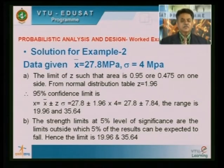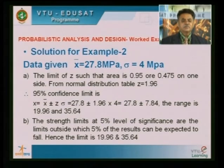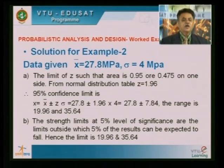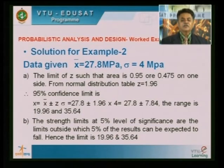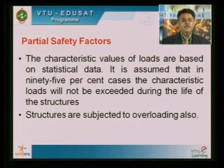The 95 percent confidence limit: x = x-bar ± z × sigma = 27.8 ± 1.96 × 4 = 27.8 ± 7.84. The range is 19.96 to 35.64. Parts B and C are calculated on the same basis — I hope they are self-explanatory.